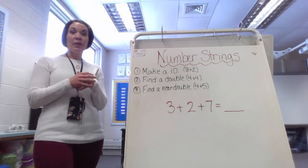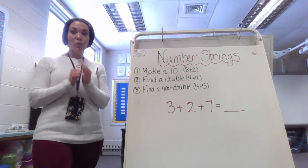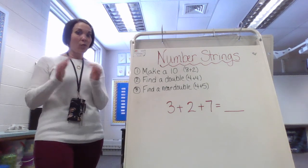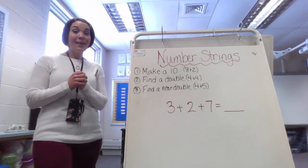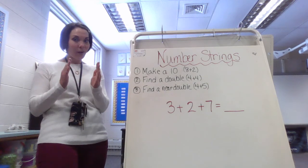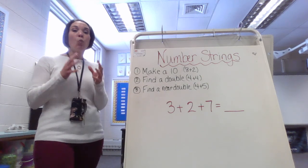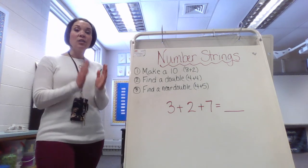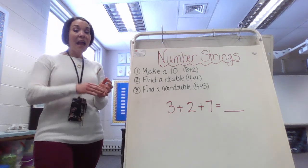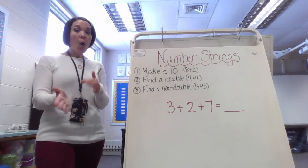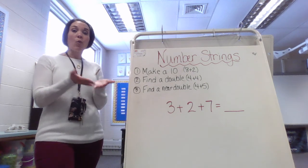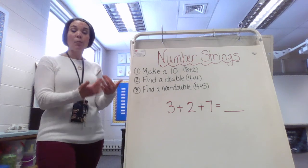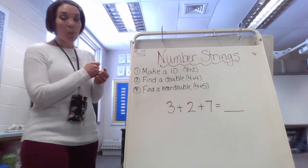If you notice, 2 and 3 are right next to each other on a number line. I could have 7 plus 8, right next to each other. I could have 8 plus 9 right next to each other. 6 plus 7 right next to each other on a number line.